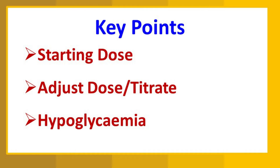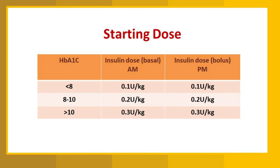After measuring blood glucose levels, there is a chance of hypoglycemia. When a hypoglycemic episode occurs, the insulin dose changes again. Such patients should be monitored on a monthly basis, blood glucose levels should be kept under control, and follow-up is very important for patients taking insulin. The starting dose is based on HbA1c: if less than 8%, go for 0.1 units/kg as basal and bolus.